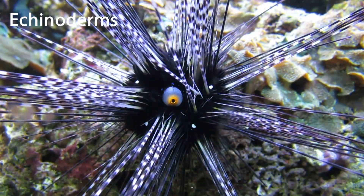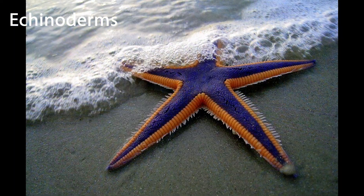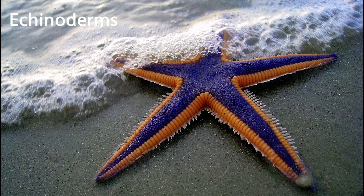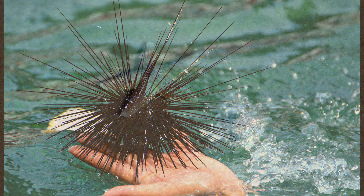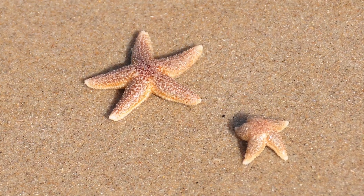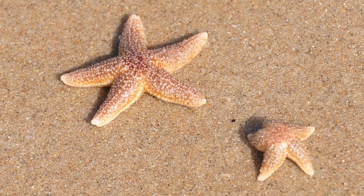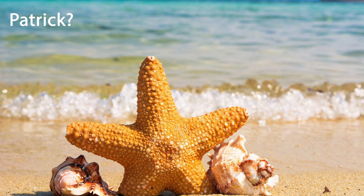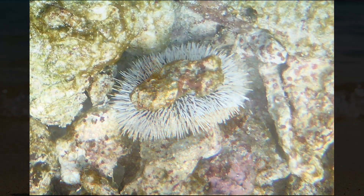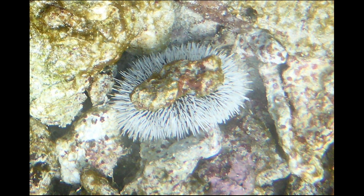Echinoderms have a hard, spiny covering or skin. They include the sea stars, which are sometimes called starfish, sea cucumbers, sand dollars, sea daisies, and sea urchins. Many people refer to sea stars as starfish, but this causes some confusion because a starfish is not a fish. Some species of sea stars have the ability to regenerate lost arms, and some can regrow a complete new disc from a single arm. In Barbados, we refer to sea urchins as sea egg, and it's a delicacy — so much so that the government regulates its harvesting.